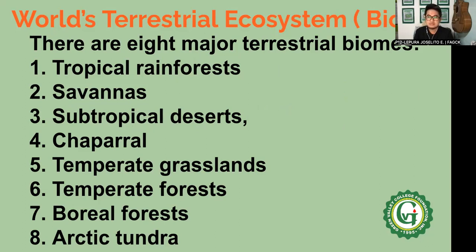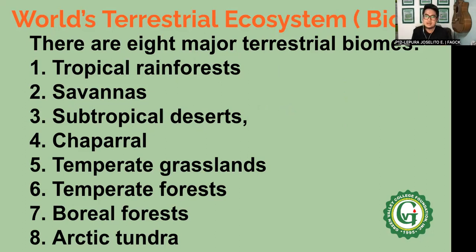Number one is your tropical rainforests. Number two, your savannas. Number three, your subtropical deserts. Number four, your chaparral. Number five, your temperate grasslands. Number six, your temperate forests and boreal forests. And number seven is your arctic tundra.